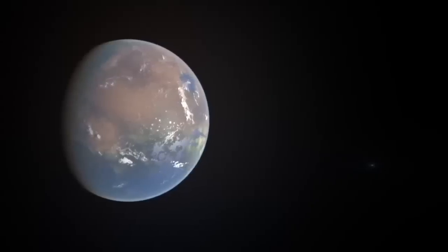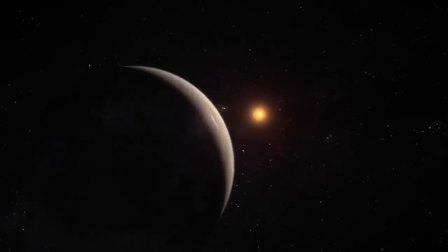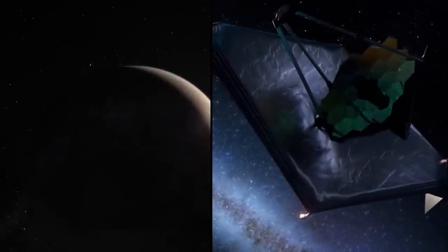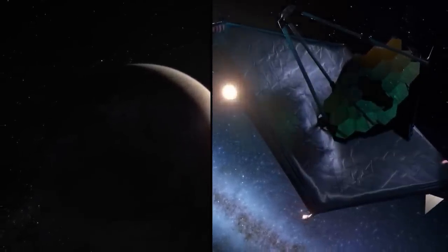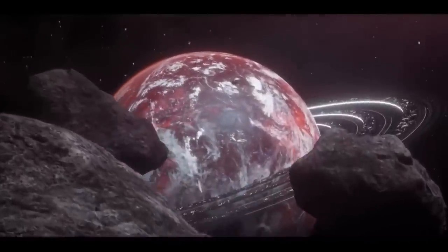Scientists are keeping an eye out for lights on Proxima b, an exoplanet far out in space, with the aid of the brand-new, highly effective James Webb Space Telescope. These lights could provide the last, conclusive proof that the planet is inhabited by extraterrestrial life.